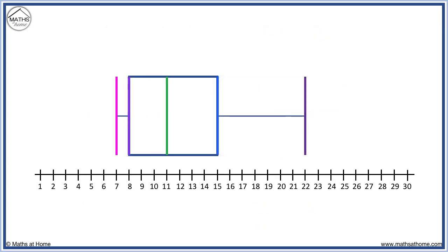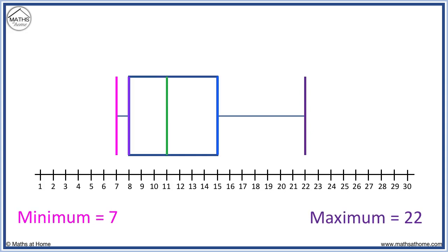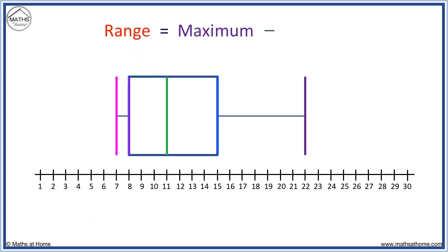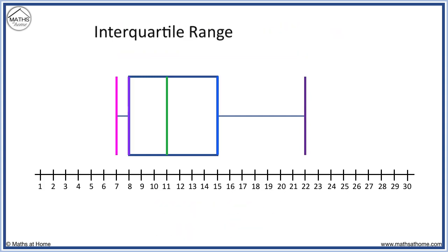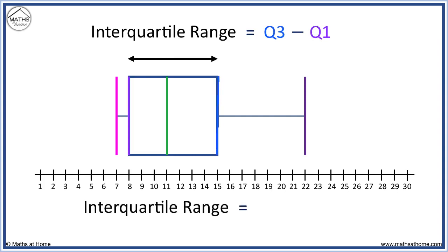Let's find the five-number summary, range, and interquartile range for this box plot. The minimum is 7, the maximum is 22, the median or Q2 is 11, Q1 equals 8, and Q3 equals 15. Now we can use these numbers to find the range and interquartile range. The range equals maximum minus minimum, which is 22 minus 7, which equals 15. The interquartile range equals Q3 minus Q1, which equals 15 minus 8, which equals 7.